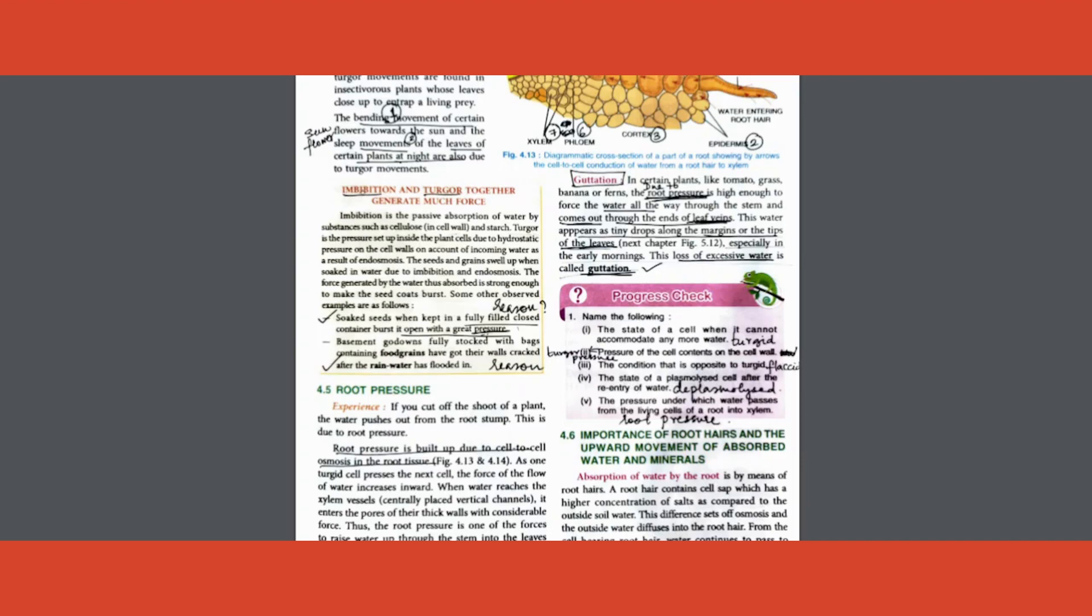Two more give-reason type questions. Soaked seeds, when kept in a closed container, burst suddenly with great pressure. What could be the reason? Again, turgor pressure here. One more additional reason is imbibition. I hope you remember what is imbibition. Any plant cell, whether it's a dead cell or a living cell, has the ability to absorb water because of the presence of cellulose. Because of that, it takes in a lot of water due to surface attraction, and this process is called imbibition. So if you get this question, you are supposed to write two points: one is turgor, another is imbibition.